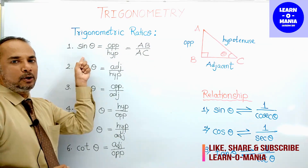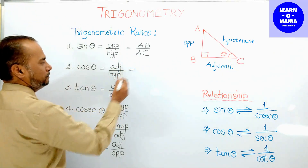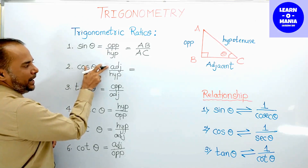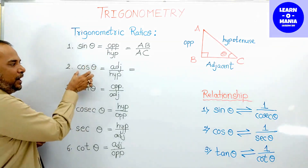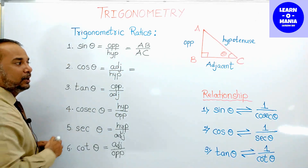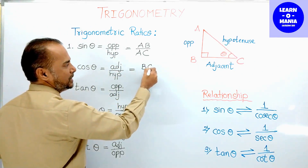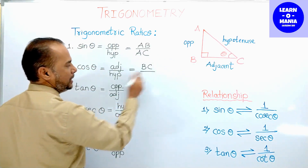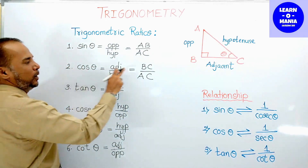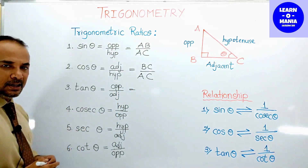So as per this figure, sin theta equals AB upon AC. Second: cos theta. Cos theta is always adjacent side upon hypotenuse. To find cos theta in a right angle triangle, divide the adjacent side by the hypotenuse. As per this figure, cos theta equals BC upon AC.